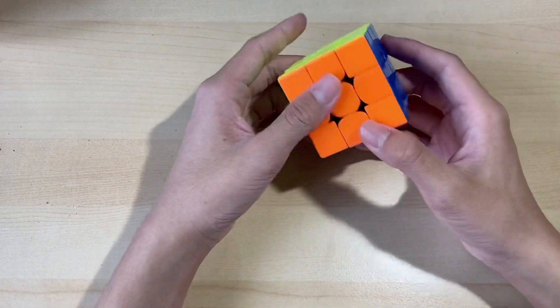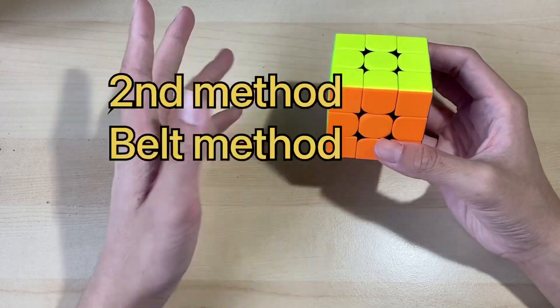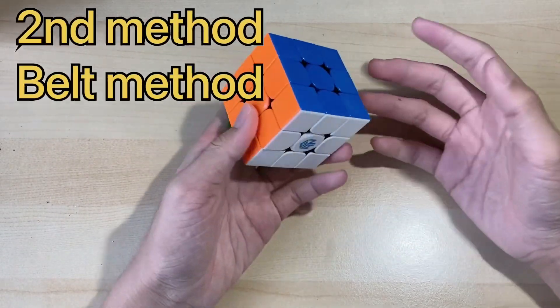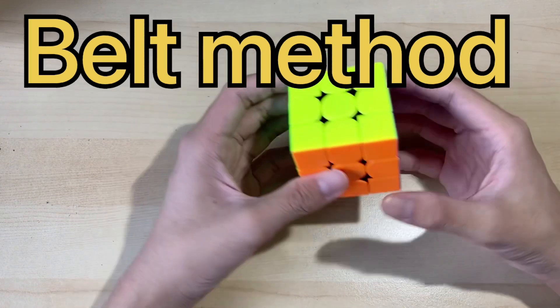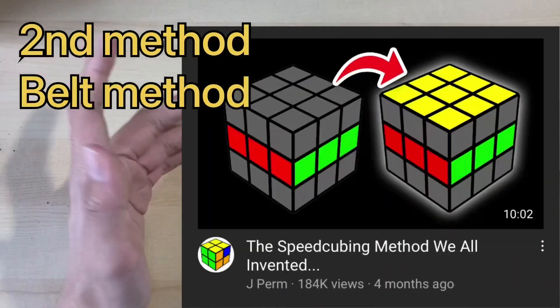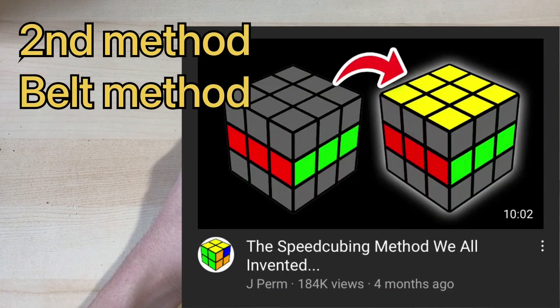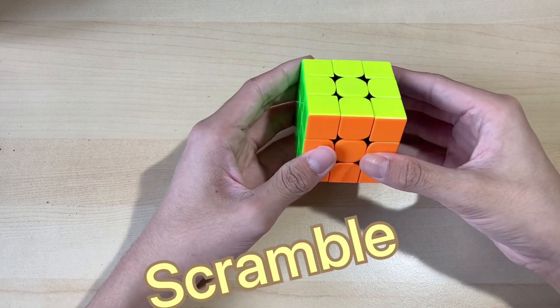So let's go into the next method, which is the belt method. So I guess from the video the idea. So let's scramble the cube up first.